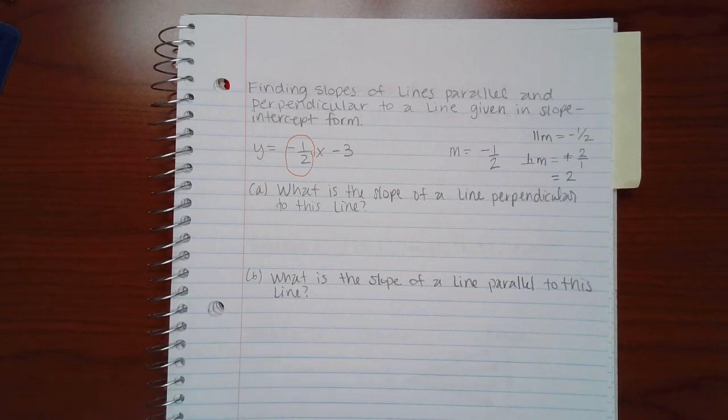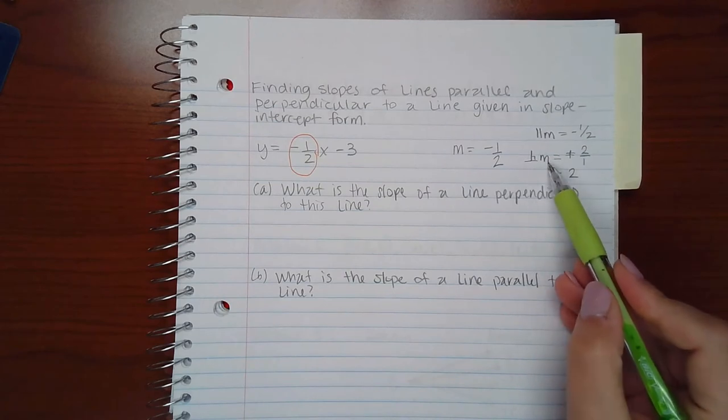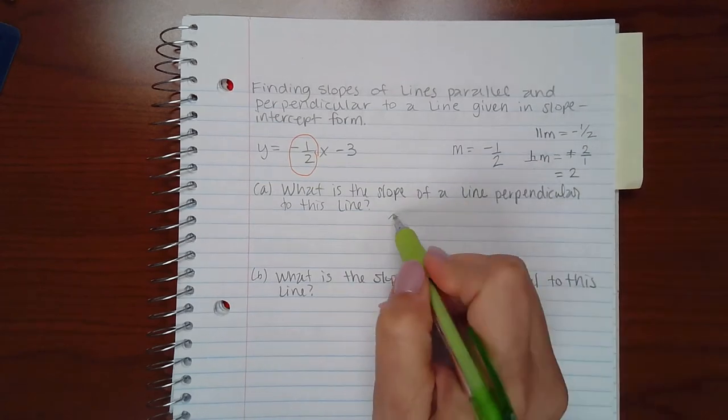For part A, it says what is the slope of a line perpendicular to this line? That would be the perpendicular slope, which we calculated to be two.